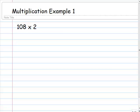Here's our multiplication example. We're going to multiply 108 times 2, and the first suggestion is to write this vertically, 108 times 2. It's really good to line them up, the ones in the ones place, the tens and the hundreds.